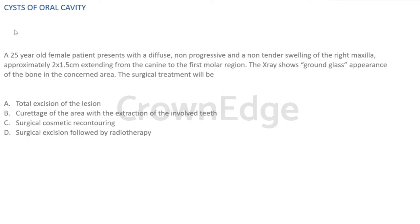Looking at the treatment options: A is total excision, B is curettage with extraction of involved teeth, C is surgical cosmetic recontouring, D is surgical excision followed by radiotherapy. Radiotherapy is absolutely contraindicated in fibrous dysplasia because the lesion, once subjected to radiotherapy post-surgery, can lead to post-radiation bone sarcoma. So option D is eliminated.